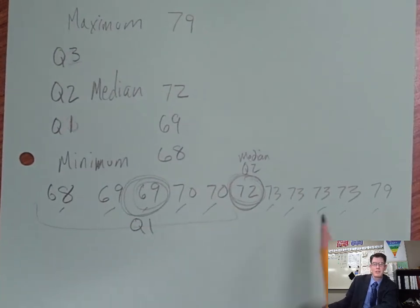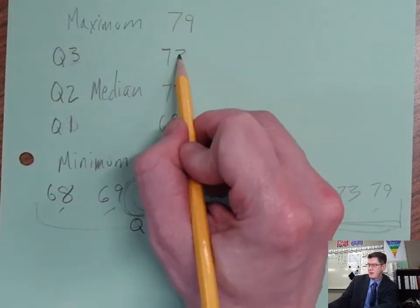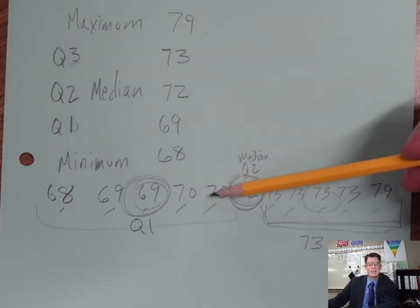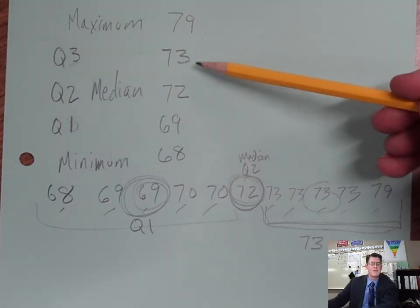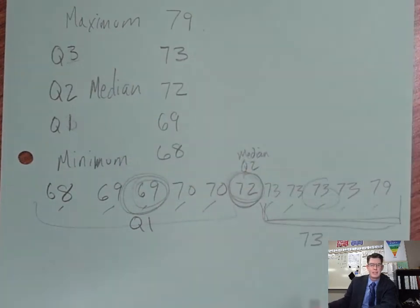And then up here I do the same thing over here in this section. What's the middle number of the upper section? We've got 73, so 73 is the upper quartile. And now I found my maximum, my minimum, the one in the very middle, and then the middle of the upper half and the middle of the lower half. I've split it into four sections: one, two, three, and four sections.